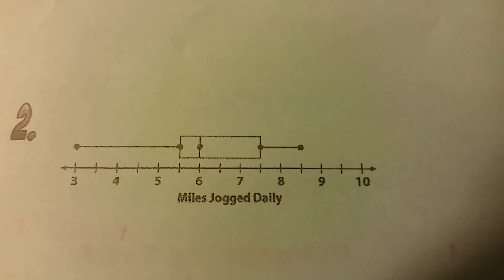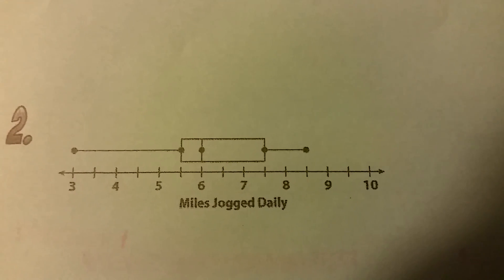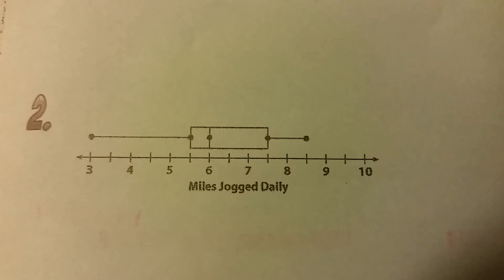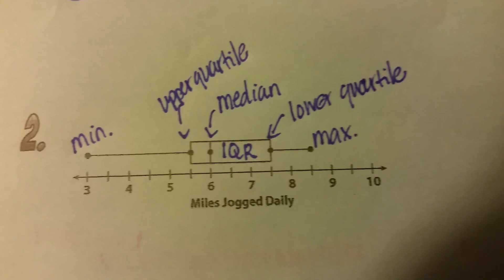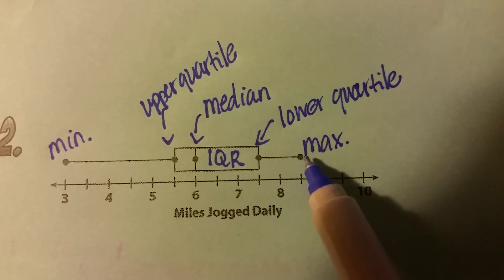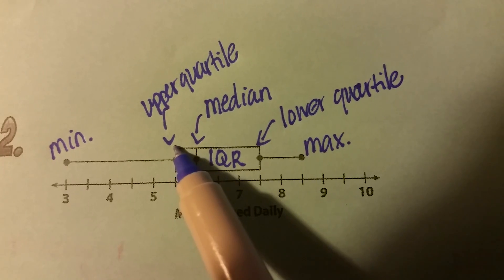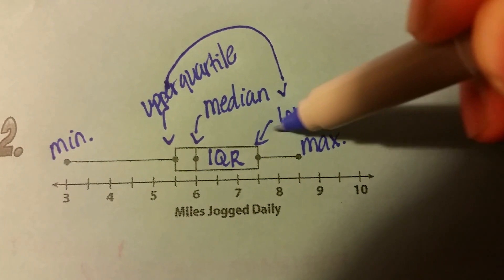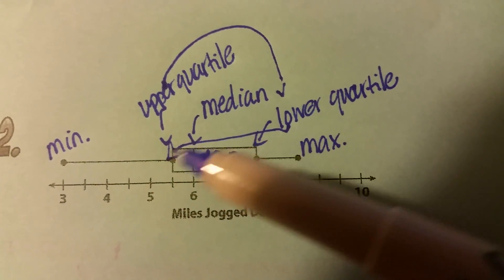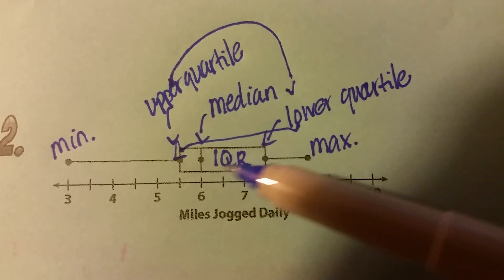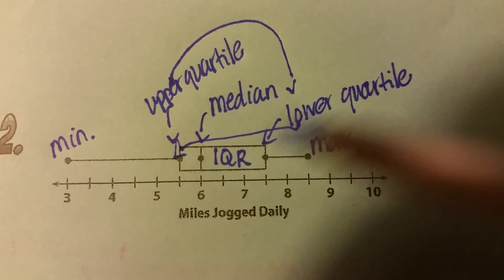Now we're moving on to our box plot. I'm going to pause here and give you and your partner a chance to talk about what you can infer. Before we discuss, I labeled the minimum, the maximum, the upper quartile, the lower quartile — sorry, I got those switched; this is the lower quartile and this is the upper quartile. The median is the line in the middle of the box, and the interquartile range is the box itself, which is where most of my data lies.